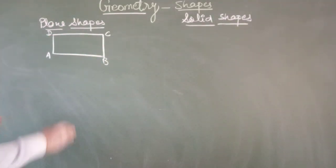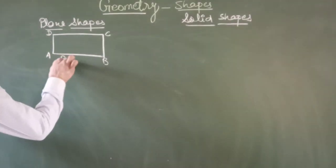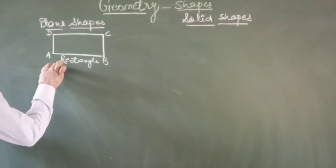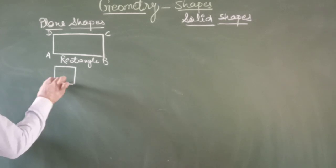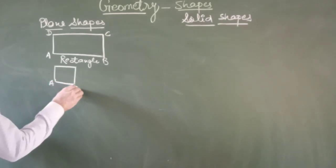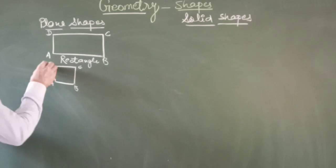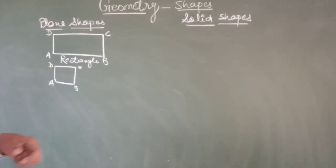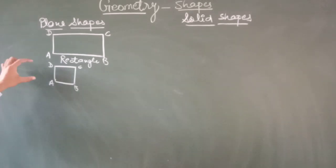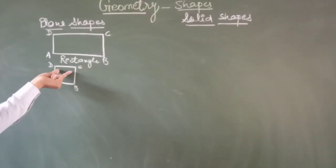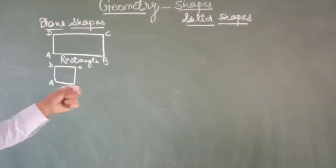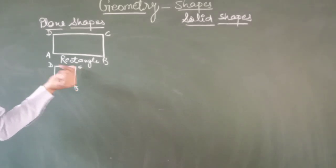The next one is a square. A square is also a rectangle — an ideal rectangle — where all sides are the same and all angles are 90 degrees. A square has four sides: AB, BC, CD, and DA, and also four vertices, which are corners: A, B, C, and D.